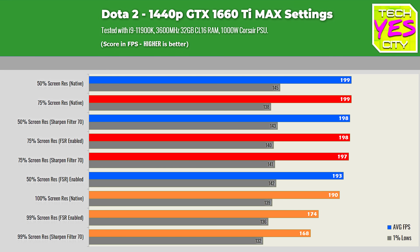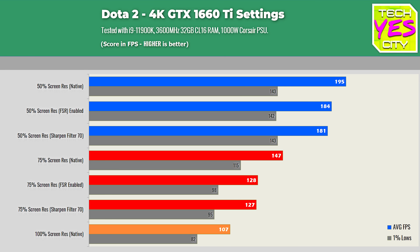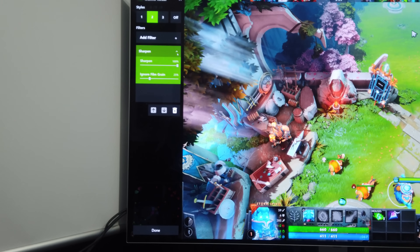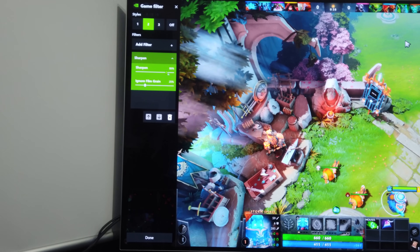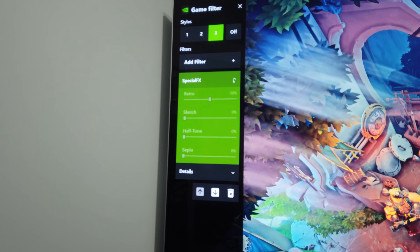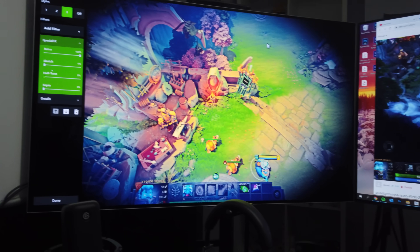With the GTX 1660 Ti we get CPU-bound at 1080p and 1440p, much like the RX 570, but at 4K we start to see a difference. At 1440p we included a 99% resolution scaling benchmark with Nvidia's sharpening filter from their Freestyle game filter — which you can enable in Dota 2 — alongside FSR, which AMD describes as an upscaling pass combined with a sharpening pass.